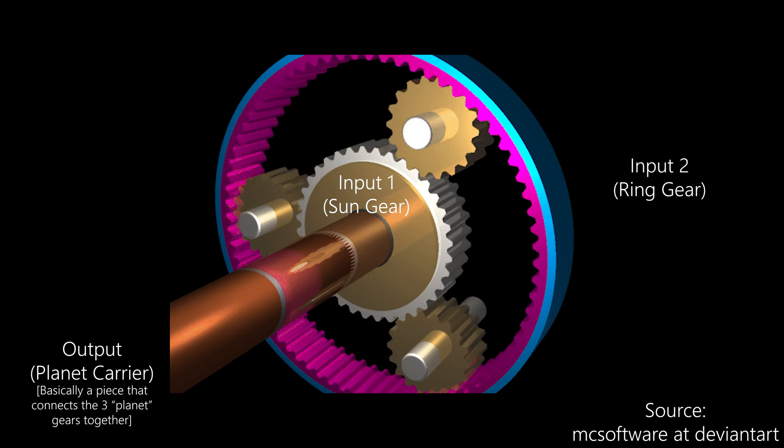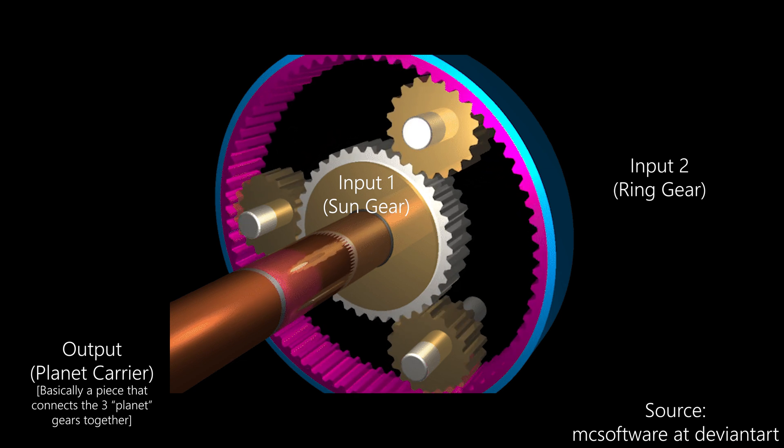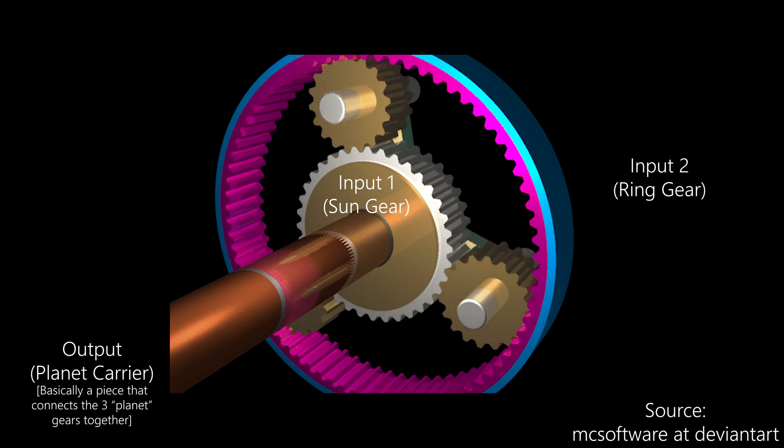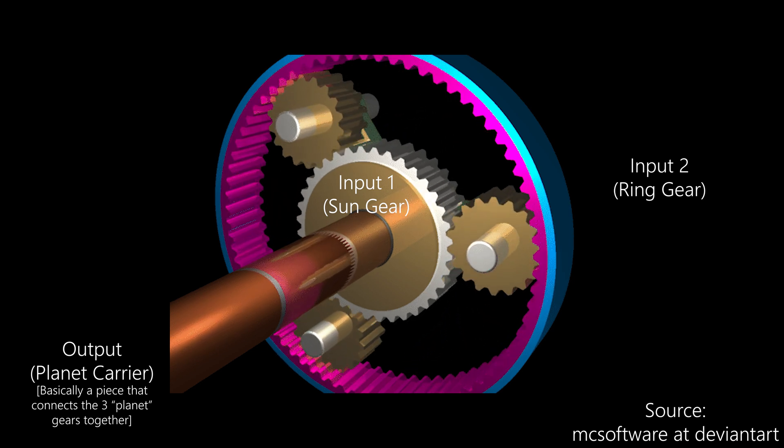A planetary gearbox is basically a gear set that can have two inputs and a single output. The outer gear, the ring gear, can drive the output with a defined ratio, and the inner gear, the sun gear, can also drive the output simultaneously with another defined ratio.